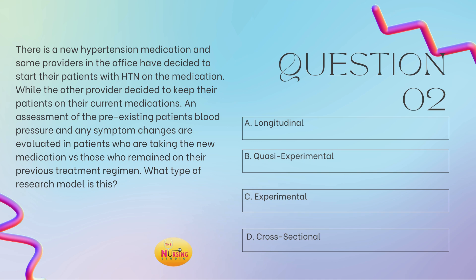Again, reading the stem of the question first — what type of research model is this? Let's break this down. There's a group, we have a treatment — that hypertension medicine — and we're not randomly assigning. It was non-random. Hey, you decided you wanted to use this for your hypertension patients; hey, you decided you're not — you're going to keep your patients on what they previously were being treated on. And then we're just evaluating the changes in those taking the new medicine versus those who remain on their current treatment. So this is B, quasi-experimental.